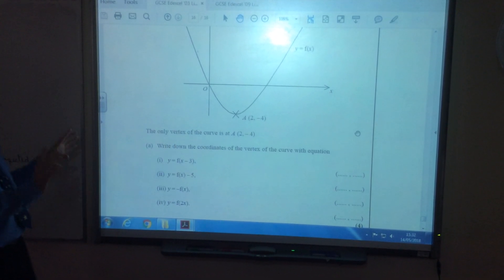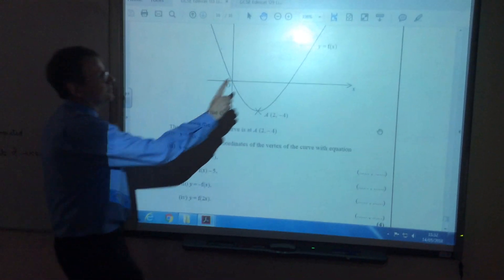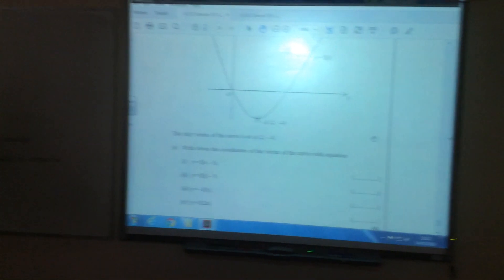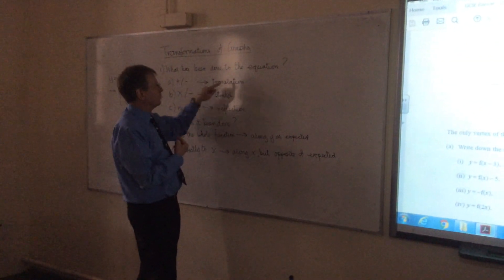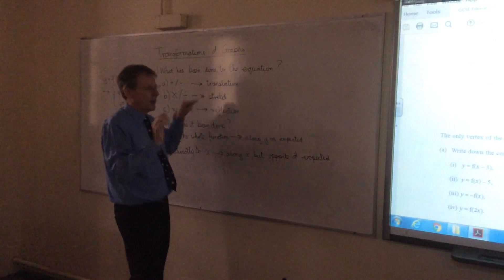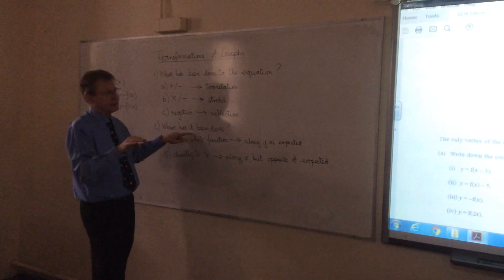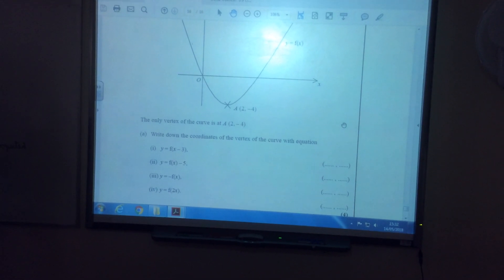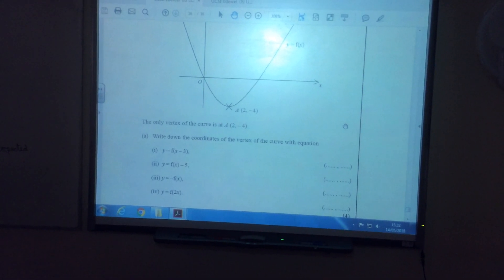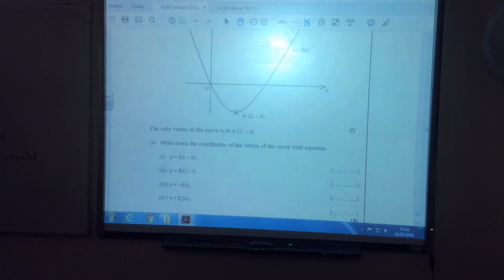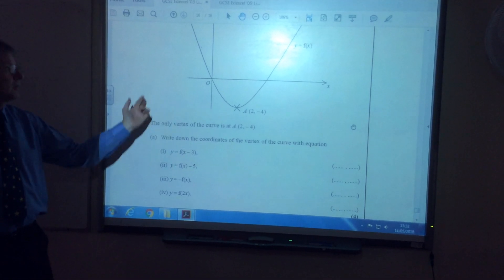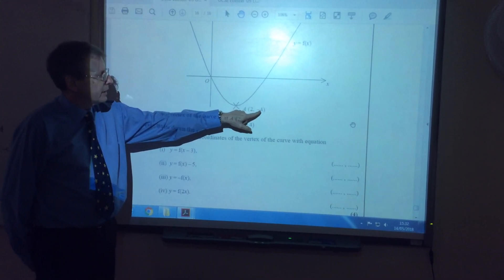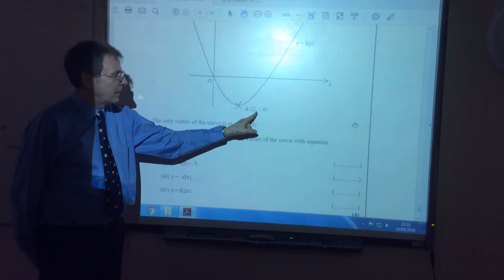So in the first one, y is f of x minus 3. So all we've got to do is think about our rules. First of all, in what way has it been changed? Well, we've gone from f of x to f of x minus 3. Clearly, the change is to subtract 3. So if I'm going back over here, you can probably see it very well now. Adding or subtraction will give us a translation, so we know it's a translation. But we now ask ourselves the second question. Where has it been done? Well, it's been done directly to the x. The alternative would have been f of x, close brackets, minus 3. So that means it's going to be done along the x-axis, but will do the opposite of what you'd expect. So you'd probably expect this to go 3 to the left. It does the opposite. It goes 3 to the right. Well, if it goes 3 to the right, then that coordinate is going to increase by 3, and that's going to stay the same. So the answer there will be 5, negative 4.